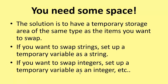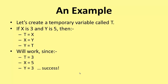Let's have a look at this happening. Let's create a temporary variable which I'm going to call T. So if X is 3 and Y is 5, then what we do is we say T is equal to X. We've now got the value of X stored somewhere. Now we can say X is equal to Y, and then Y is equal to T. Because what's in T is what used to be in X, now X and Y have swapped their values.